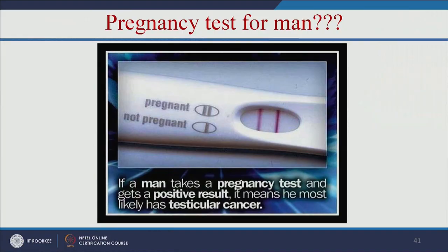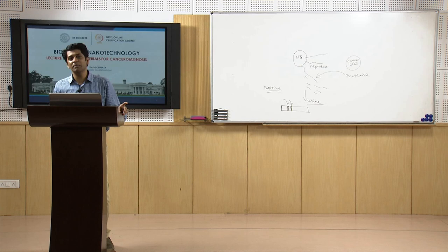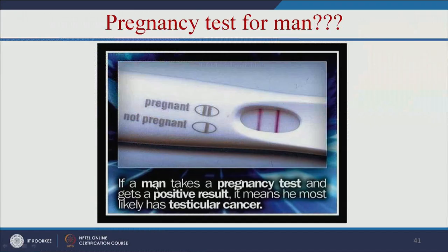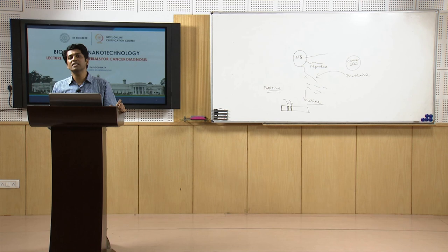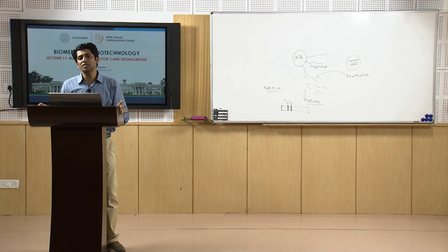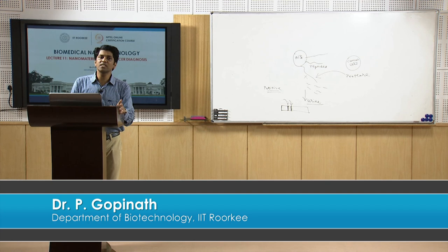Another example relates to the pregnancy test kit. If a man takes a pregnancy test kit and gets a positive result, it means he is most likely to have testicular cancer. So a positive result for a man in a pregnancy test kit indicates a higher chance for testicular cancer. There are several methods available for cancer diagnosis, and every day new discoveries are coming in this field for advancing the early diagnosis of cancer.